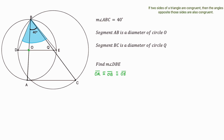Now look what we have. If we look at triangle OBE, it's a triangle where two of its sides — specifically OB and OE — are congruent. This is where our theorem can come into play. The two congruent sides are OB and OE, which means the angles opposite them must be congruent: angle OBE, which is opposite OE, and angle OEB, which is opposite OB. So angle OBE is congruent to angle OEB.